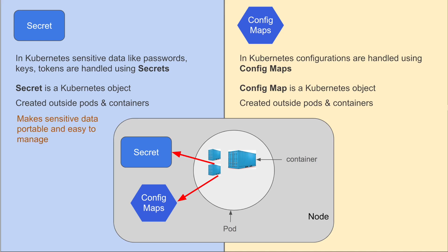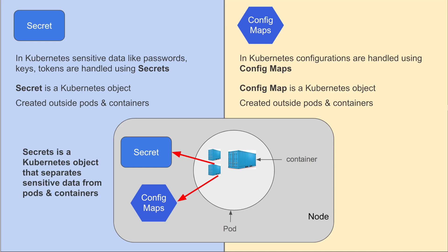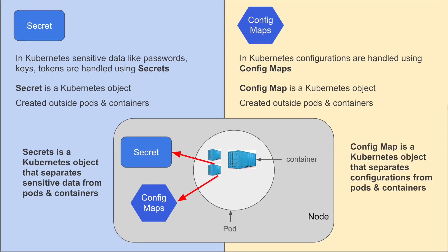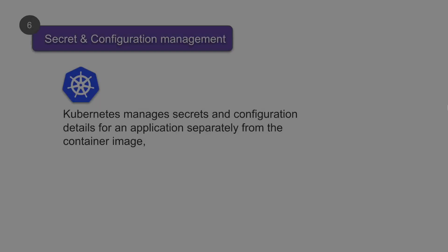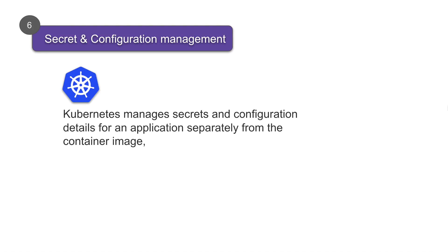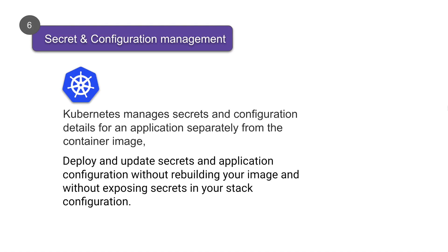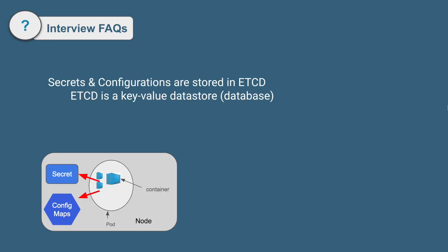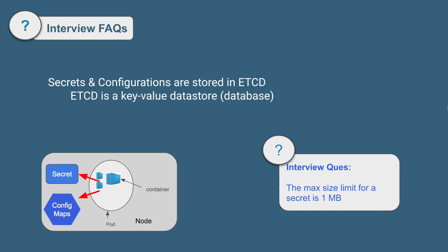Because secrets and config maps are located outside and not coupled with pods or containers, it is easy to manage both the sensitive data and the configurations — they are portable and easy to manage. In simple words, secrets separate sensitive data from pods and containers, and config map separates configurations from pods and containers. Secrets and configurations are stored in a key-value data store called etcd, and the max size limit for a secret is 1MB.